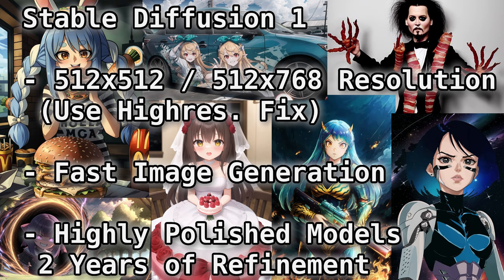To sum up Stable Diffusion 1: it's the first one to come out, it's got the lowest system requirements to run, anything you see today has a very long history of being refined over a two-year period, and it's fallen out of favor to XL but is still not dead in late 2024.